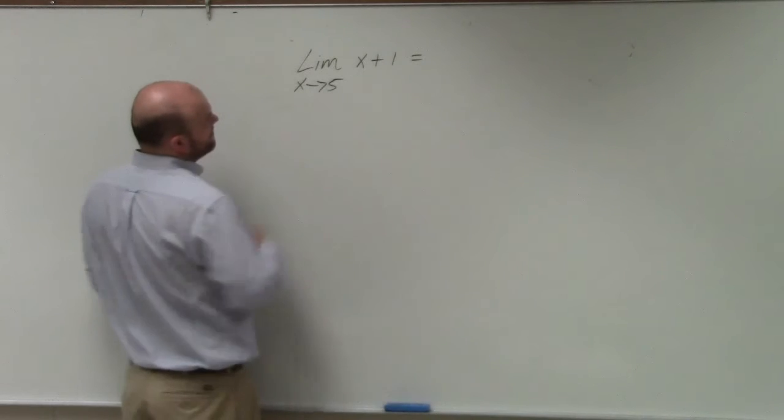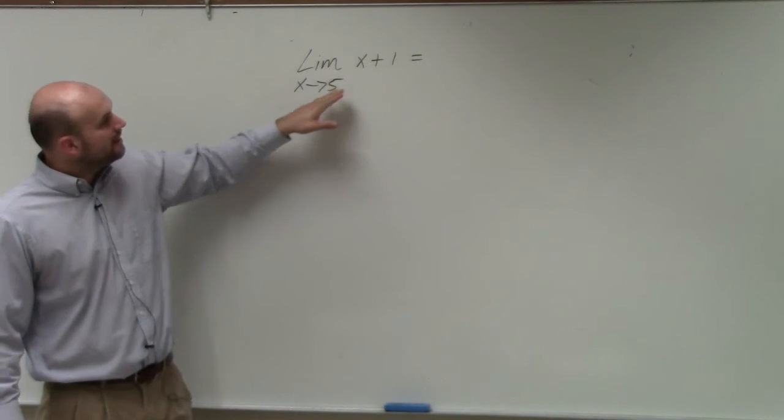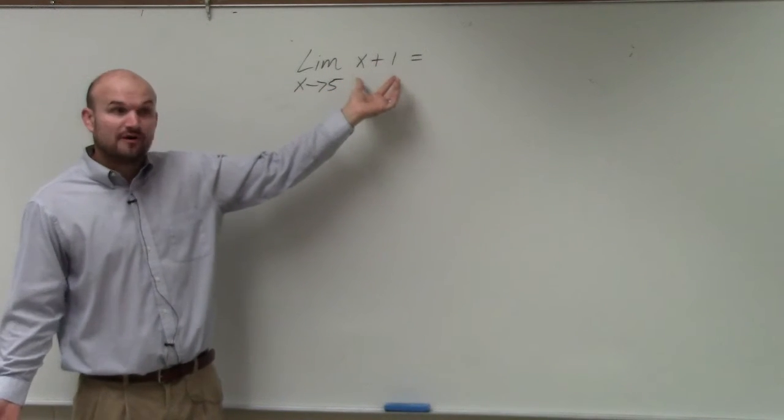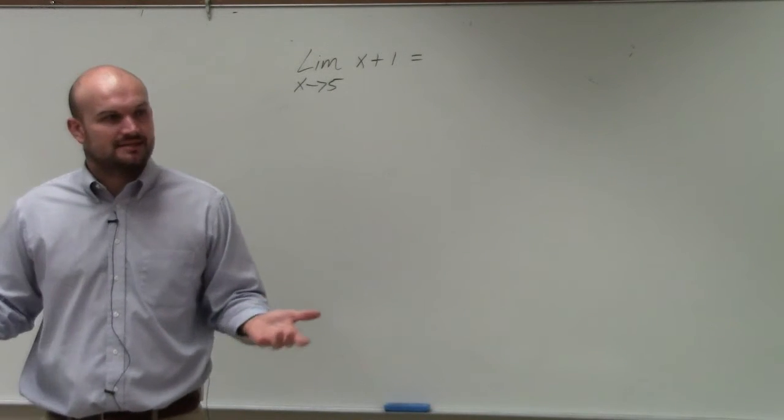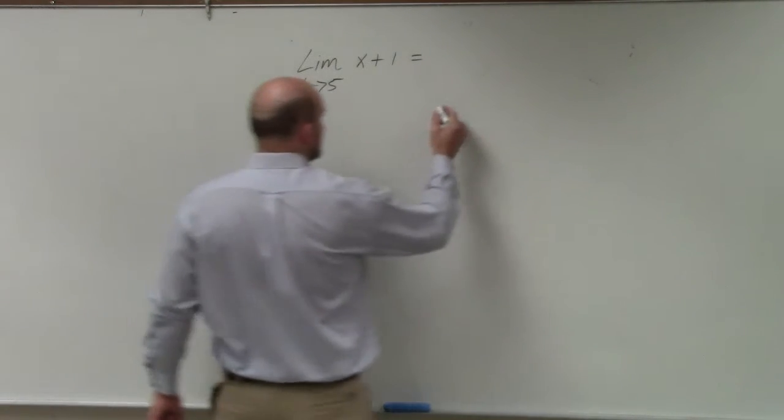So we're looking at the limit as x approaches 5 of the function. Remember, it was f of x. Now we have a function which is going to be x plus 1, and what is that going to equal? Well, we can look at this. This example is fairly simple, so we can look at it a couple different ways.